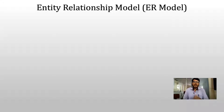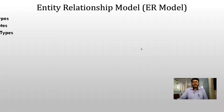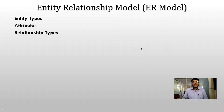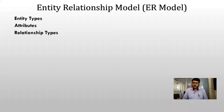Now let us look at the terms we use in the ER model, that is the Entity Relationship Model. In this model, we use three main terms: Entity Types, Attributes, and Relationship Types. Let us see what Entity Types mean.